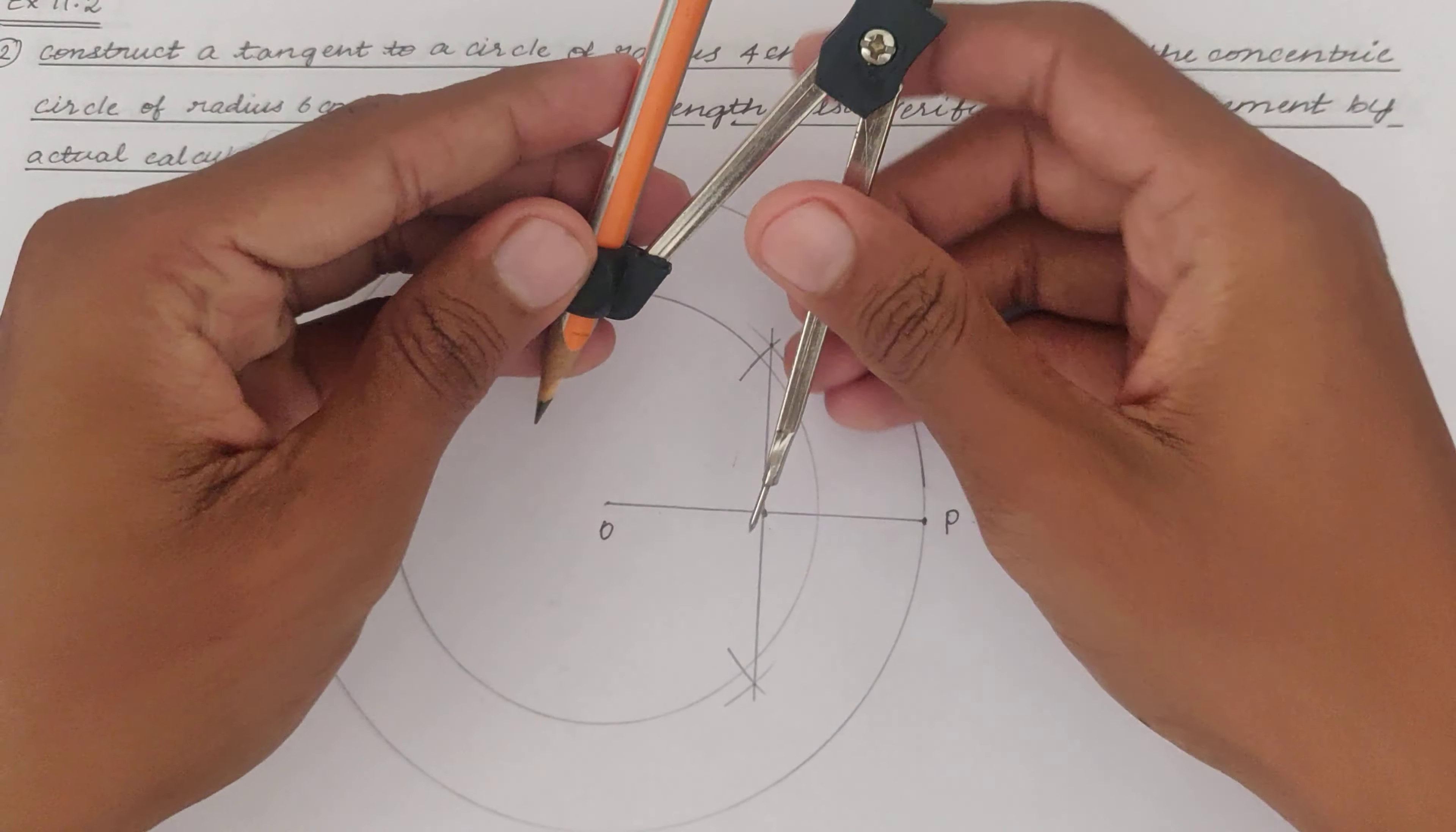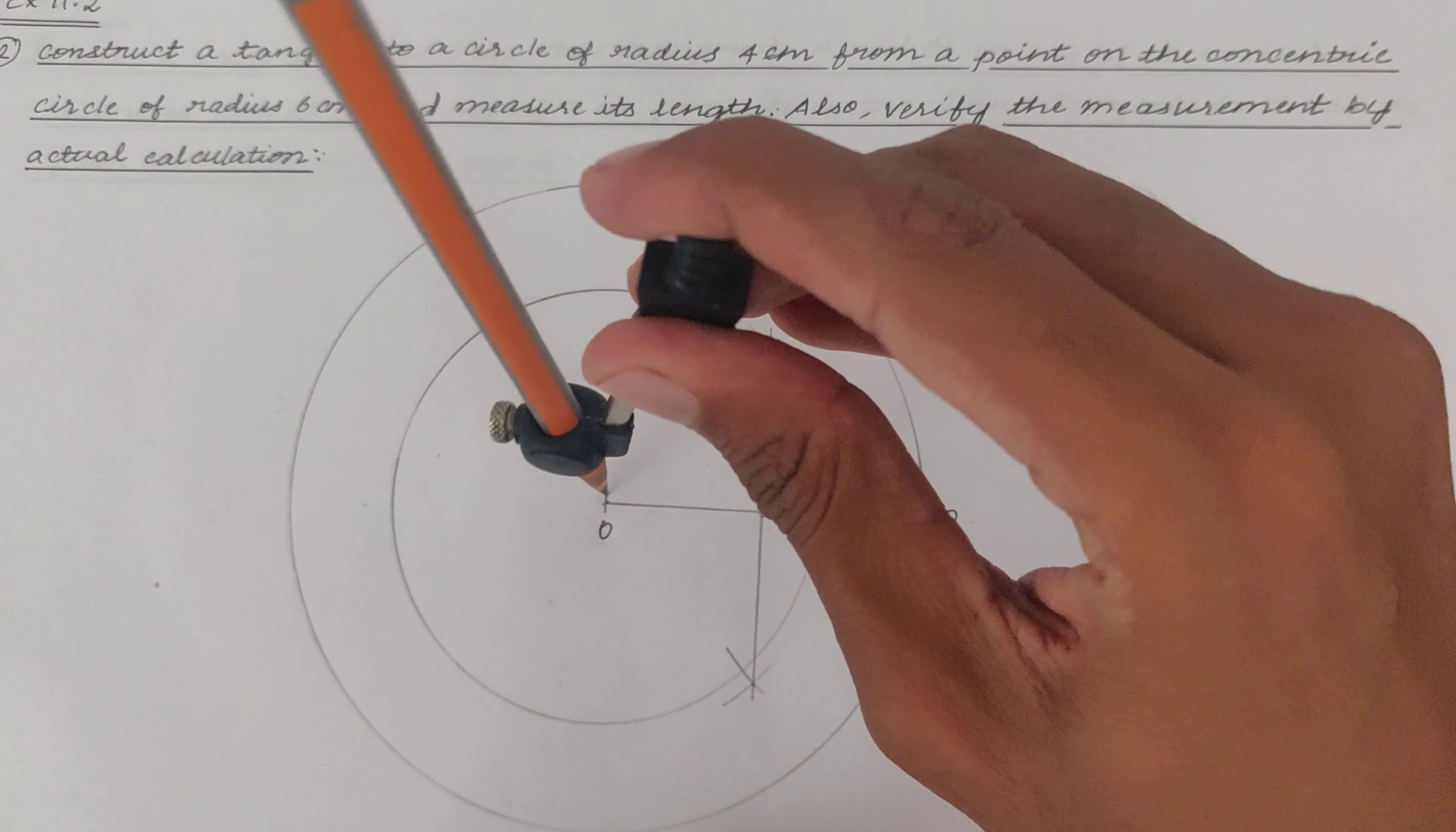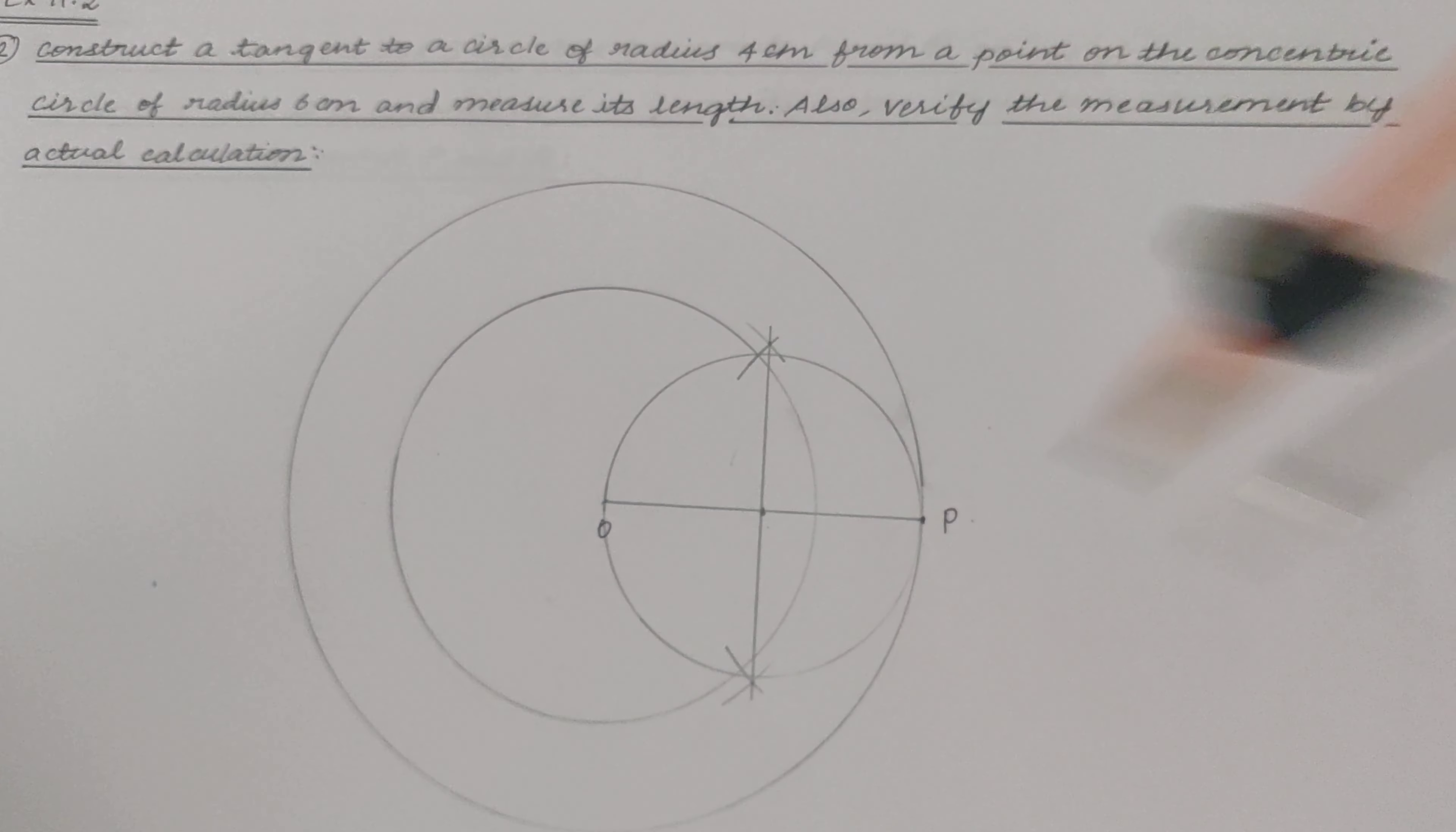From this point we need to adjust the compass in such a way that it is starting from O. So starting from O, we need to draw another circle. We can very clearly see that this circle will pass through P as well.